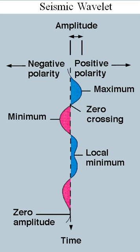Wavelets are defined by the wavelet function ψ, i.e. the mother wavelet and scaling function ϕ, also called the father wavelet, in the time domain. The wavelet function is in effect a band-pass filter and scaling that for each level halves its bandwidth. This creates the problem that in order to cover the entire spectrum, an infinite number of levels would be required. The scaling function filters the lowest level of the transform and ensures all the spectrum is covered. For a wavelet with compact support, ψ can be considered finite in length and is equivalent to the scaling filter g. Meyer wavelets can be defined by scaling functions.